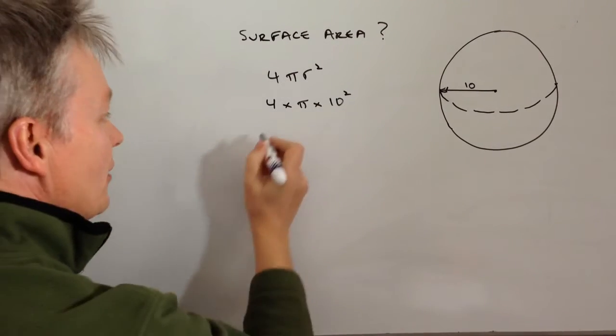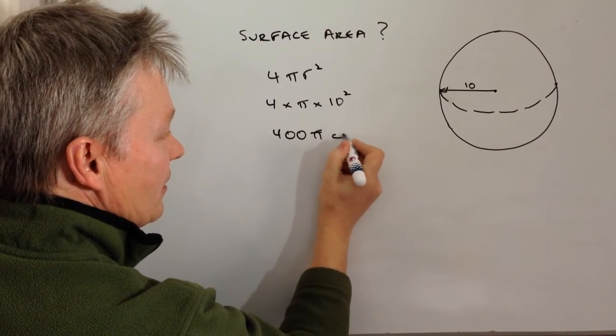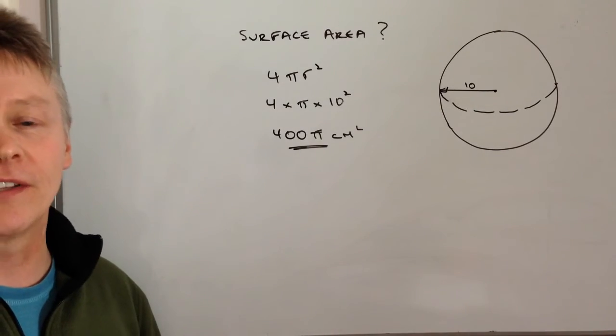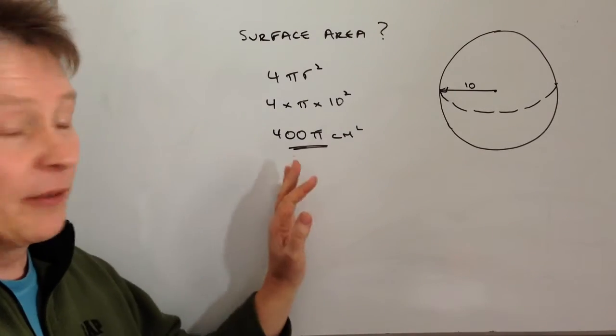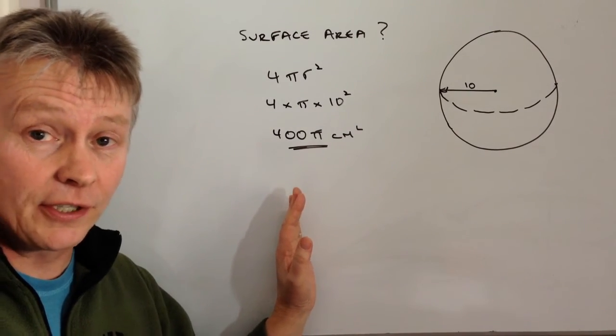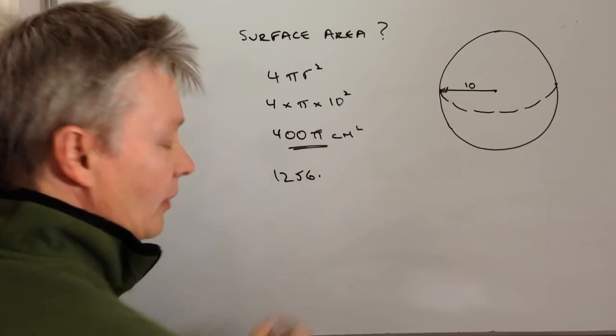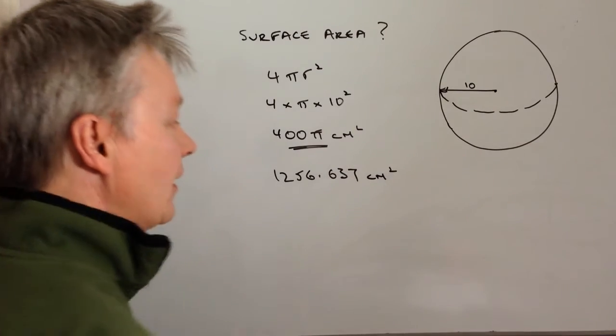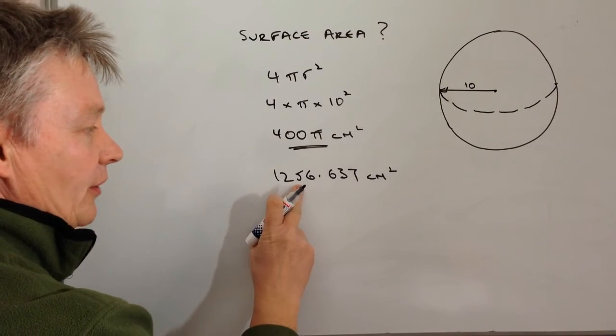So that's going to be 400π centimeters squared. Or if the particular question asks you to calculate this to something like three significant figures, if you put that into a calculator you're going to get 1256.637 centimeters squared, and that's to three significant figures.